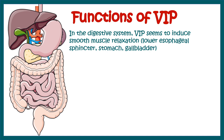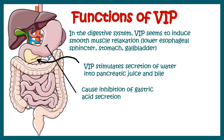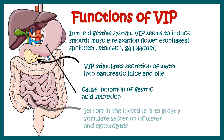In the digestive system, VIP induces muscle relaxation in the esophageal sphincter, stomach, and gallbladder. VIP also induces secretion of pancreatic juice and bile, causes inhibition of gastric acid secretion, and in the intestine its role is to stimulate the secretion of water and electrolytes.